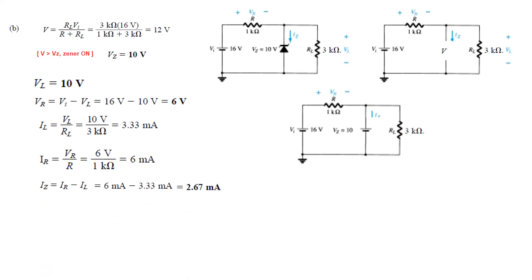And from here we can find now the current through the diode, which is this current IR minus IL. So IR minus IL is 2.67 milliampere.